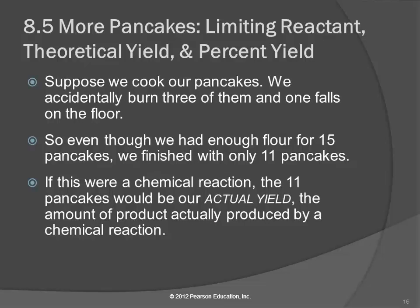So we're cooking our pancakes — we burn three of them and one falls on the floor. We had enough stuff to make fifteen pancakes, but we ended up with eleven. That's kind of realistic — stuff happens. So if this was a chemical reaction, we would say that eleven pancakes is our actual yield. The theoretical yield is how much we could make if everything works perfectly, and the actual yield is generally going to be smaller.